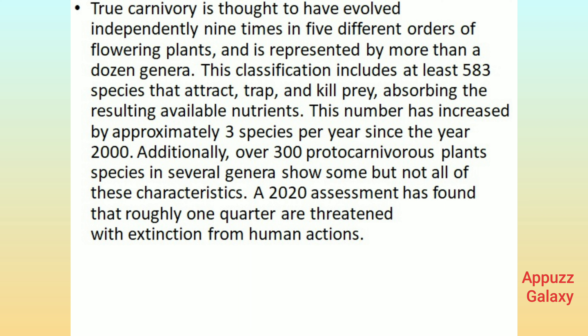True carnivory is thought to have evolved independently nine times in five different orders of flowering plants, and is represented by more than a dozen genera. This classification includes at least 583 species that attract, trap, and kill prey, absorbing the resulting available nutrients. This number has increased by approximately three species per year since the year 2000. Additionally, over 300 proto-carnivorous plant species in several genera show some but not all of these characteristics.